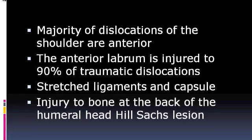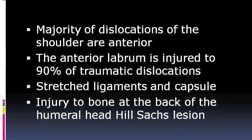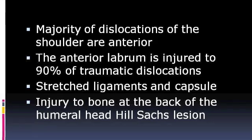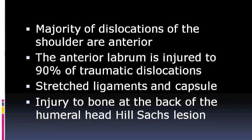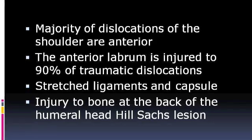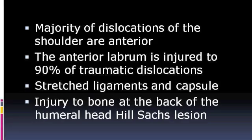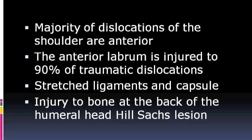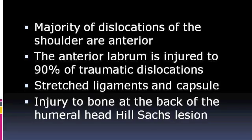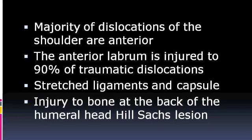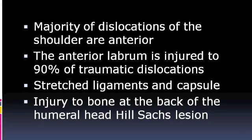When the shoulder dislocates, the labrum is detached from the anterior part of the socket and the capsule is stretched. As the humeral head rests anteriorly, there is also damage to the back of the head called a Hill-Sachs lesion.